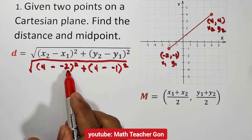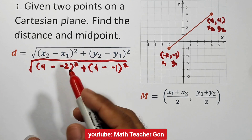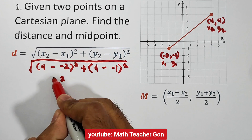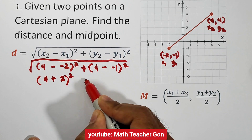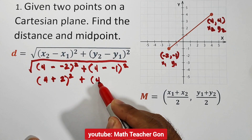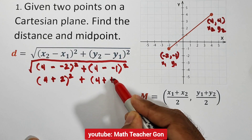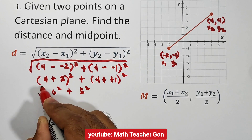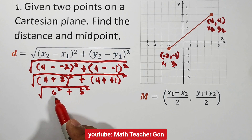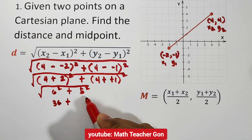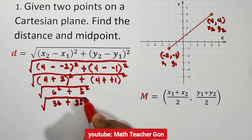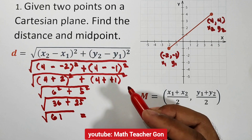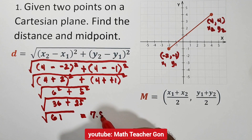4 minus negative 2: using subtraction of integers, we change the sign of the subtrahend, so it becomes 4 plus 2 squared, plus 4 plus 1 squared. 4 plus 2 is 6 squared, plus 4 plus 1 is 5 squared. 6 squared is 36, plus 5 squared is 25. The square root of 36 plus 25 is the square root of 61, which is approximately 7.81 units.